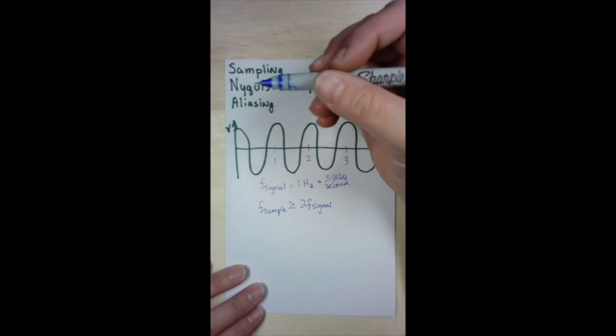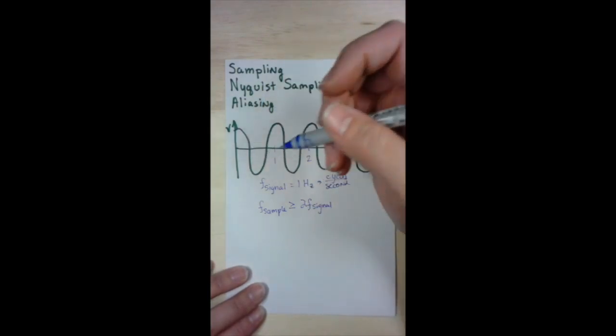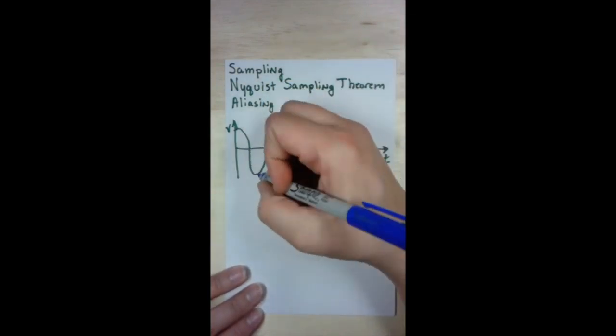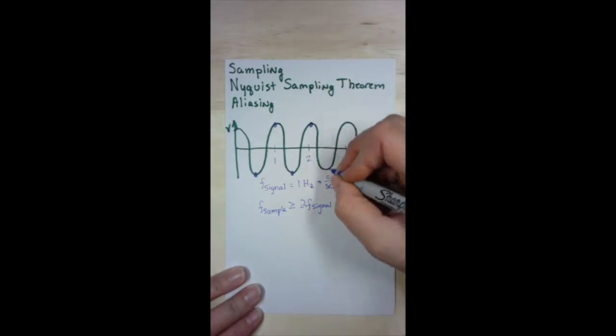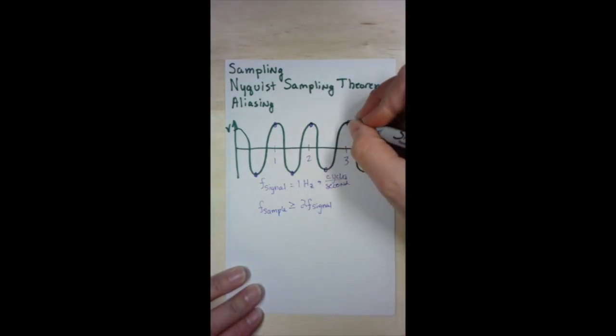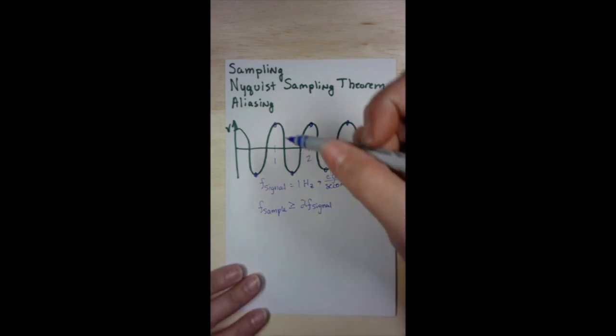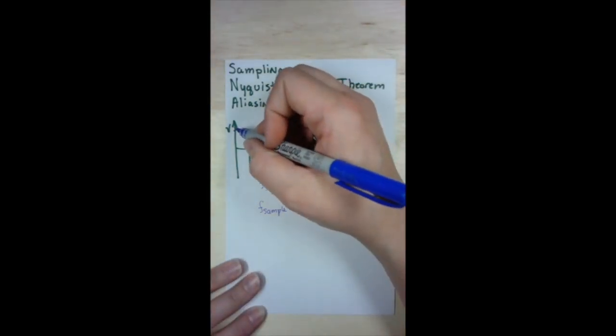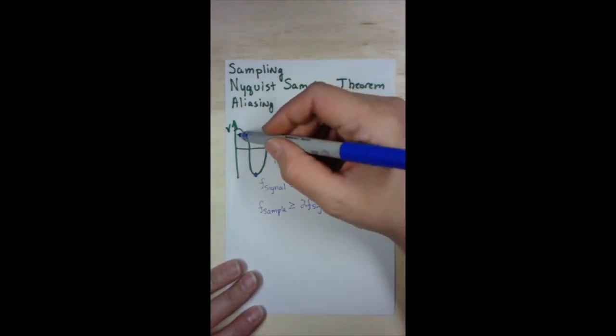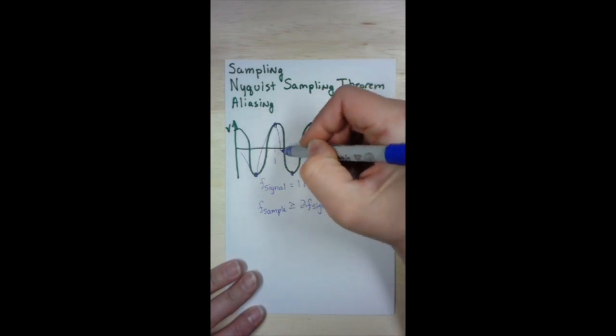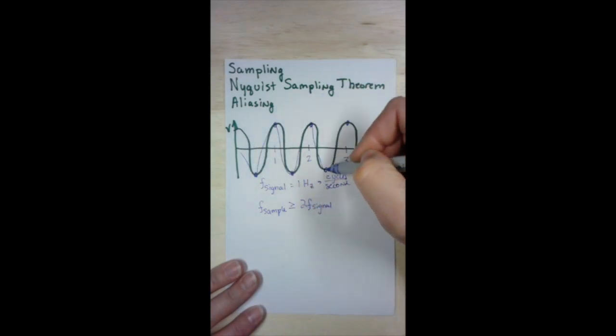I'm going to draw a blue dot for every time we're going to take a sample of the signal. Two times per second. Okay. So when we connect the dots or reconstruct the signal that we have achieved through sampling, you'll see our signal looks something like this. That's pretty close to the original signal.